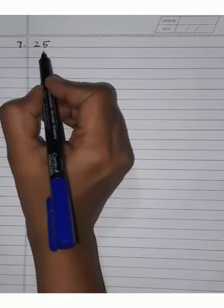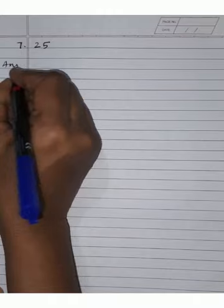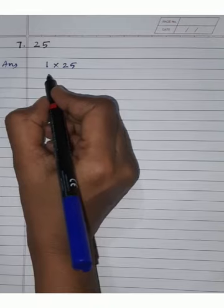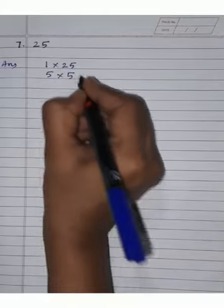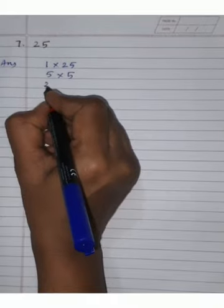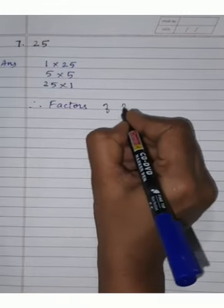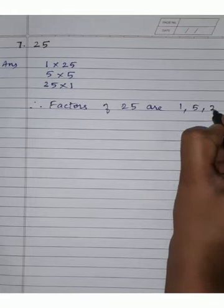Our seventh sub-question is to find the factors of 25. In the 1 times table: 1 × 25 = 25. Two, three, and four tables are not coming. 5 × 5 = 25. Six and seven tables are not coming. Then directly 25 × 1 = 25. Therefore, factors of 25 are 1, 5, 25.